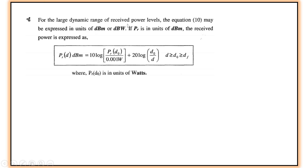For a large dynamic range of received power levels, the equation should be expressed in dBm or dBW. If PR is in units of dBm, the received power is: PR(d) [dBm] = 10 log(PR(d0) / 0.001 W) + 20 log(d0/d), where d0 ≤ d ≤ df. This is the received power found using the free space path loss model. In the next lecture, we will discuss the Two-Ray model. Thank you very much.